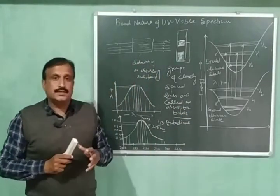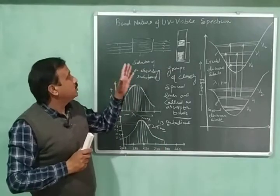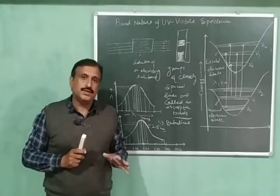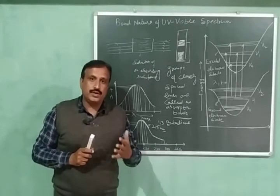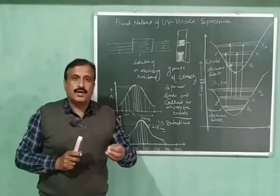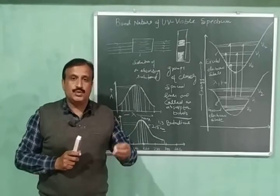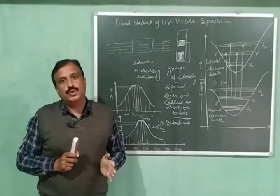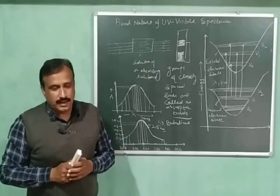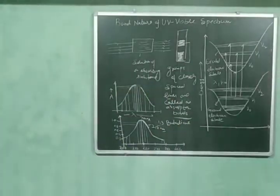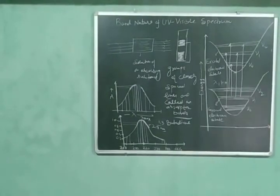This is the band nature of UV-Visible spectrum. In my next video, I am going to discuss the different types of electronic transitions possible in UV-Visible spectroscopy. Keep watching my videos, like and share, and subscribe to my channel. Thank you very much.